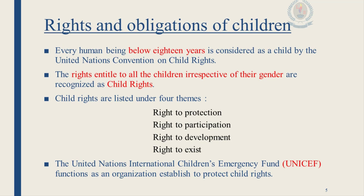The United Nations Convention on Child Rights consists of a preamble and 54 articles. Every member of the country is bound to protect and follow it. The United Nations International Children's Emergency Fund, called UNICEF, functions as an organization established to protect child rights. While you enjoy your child rights, you also have a duty to fulfill.